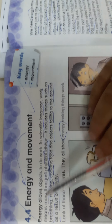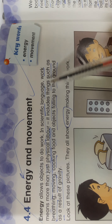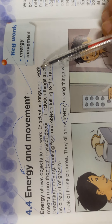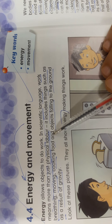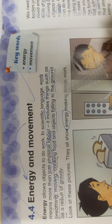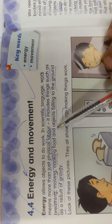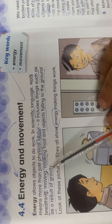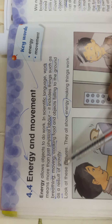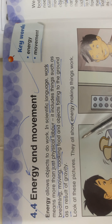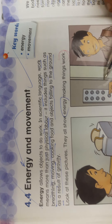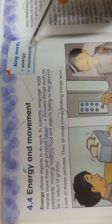Energy allows objects to do work. In scientific language, work means more than just physical labor. It also includes things such as breathing, moving, cooking food, and objects falling to the ground as a result of gravity. Gravity — al-jazibiyya — is when something is attracted to the earth's surface. As we said, all the pictures show energy making things work. To make things work, we need energy to make them move.